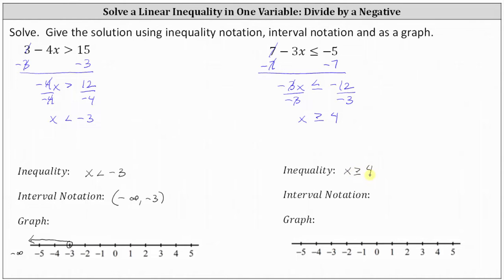Let's go ahead and graph this. Notice here, because we have x greater than or equal to four, four is a solution. Therefore, we make a closed point on positive four. And because x is greater than or equal to four, we make an arrow to the right. If we continued going right, we would approach positive infinity. Again, this is helpful to write the interval notation.